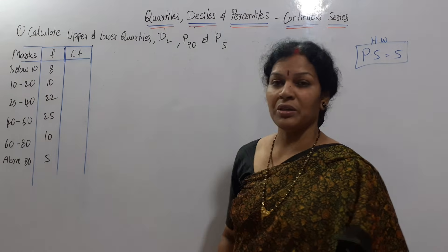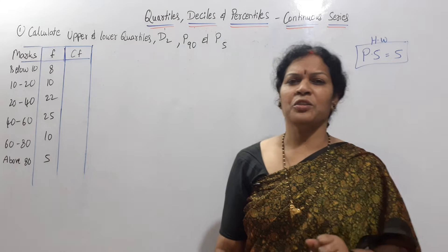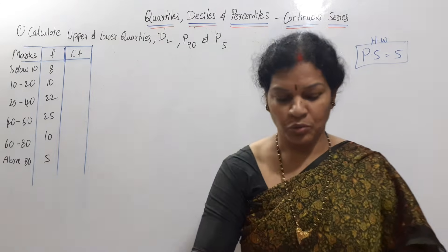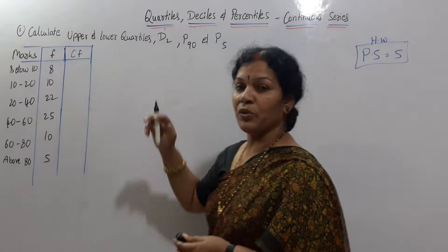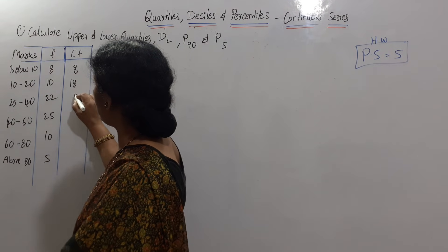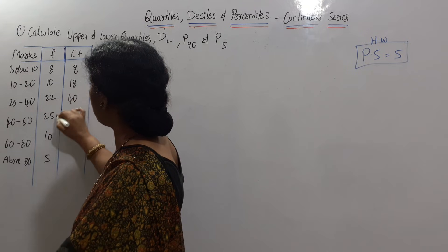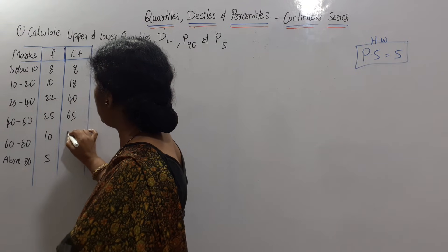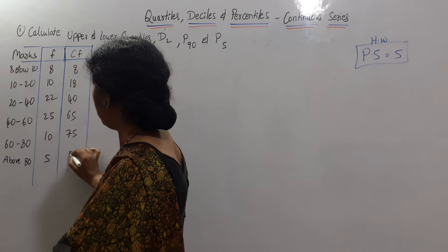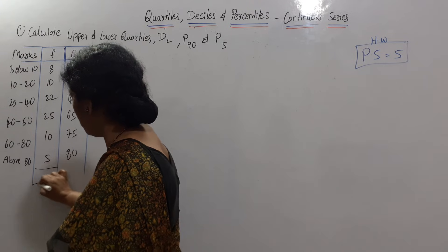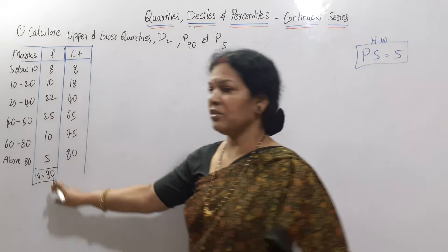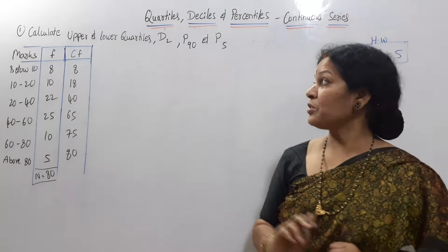Step number one is to prepare the cumulative frequency, whether it is a discrete or continuous series. So we will first go for cumulative frequency: 8, 8 plus 10 is 18, 18 plus 22 is 40, 40 plus 25 is 65, 65 plus 5 is 70, and adding 10 gives 75, and if you add 5 it is 80. So N is 80.